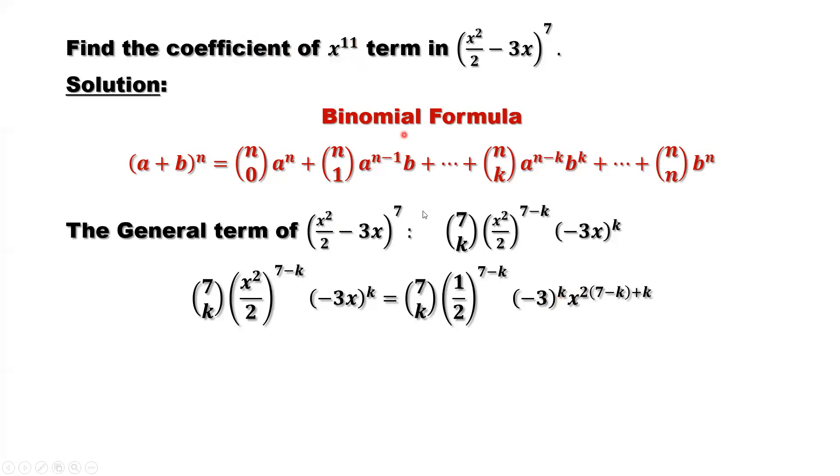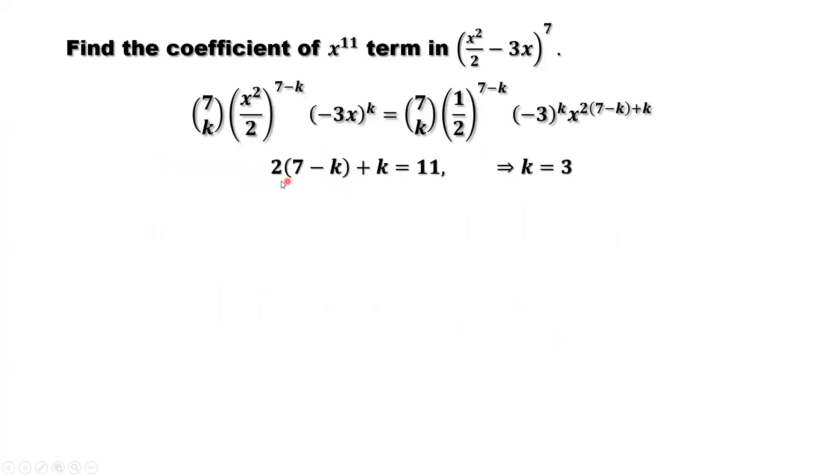x to the power 11 implies 2 times (7-k) plus k must be equal to 11. What kind of k satisfies this condition? To solve this equation, we can easily find k equals 3.